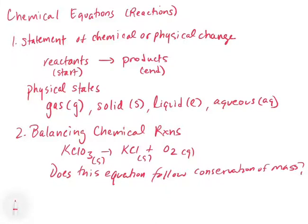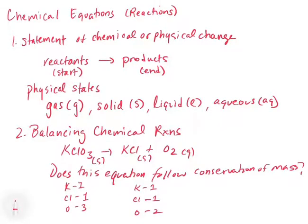On the left we have one potassium, one chlorine, and three oxygens. On the right we have one potassium and one chlorine, but only two oxygens. That's a problem — this does not follow conservation of mass. We can't lose oxygens; they can't disappear. This is what we call an unbalanced reaction — it may represent the correct products and reactants but doesn't accurately represent the quantities.